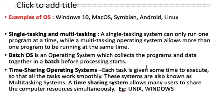Single-tasking OS can run only one program at a time, while multitasking OS allows more than one program simultaneously. Batch OS collects programs and data together in a batch before processing. Time-sharing OS gives each task some time to execute so all tasks work smoothly — examples include Unix and Windows. Most personal computers use a time-sharing operating system.